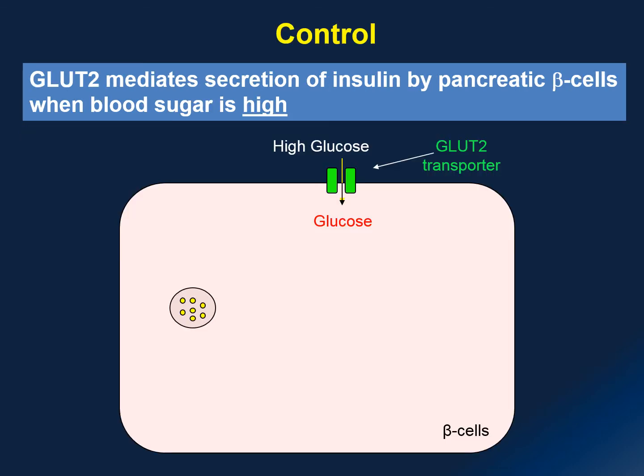Here is an illustration for glucose transporter number 2, found in your pancreatic beta cells and liver cell. Due to its high Km value, it will only transport glucose at high glucose levels.